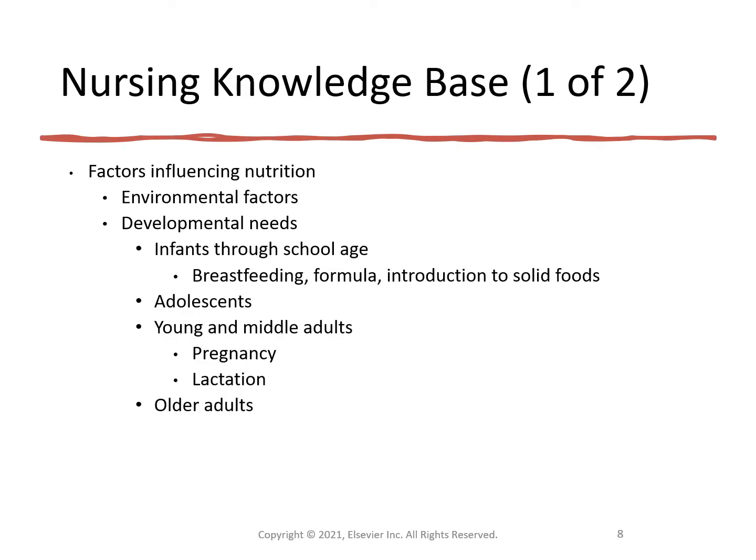In your book, boxes 45.3, 45.4, and 45.2 help you understand the nursing knowledge base. Environmental factors beyond the control of an individual contribute to the development of obesity. Obesity is an epidemic — 68.7% of Americans are overweight or obese. Overweight is considered a BMI of 25 to 29; obese is a BMI greater than 30.